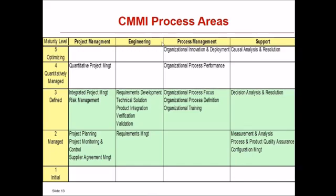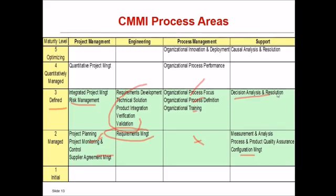The CMMI process areas by level: At level one (Initial), there are no defined process areas. At level two (Managed), project management includes project planning, project monitoring and control, and supplier agreement management. Engineering covers requirements management. Support includes measurement and analysis, process and product quality assurance, and configuration management. At level three (Defined), project management adds integrated project management and risk management. Engineering spans from requirements through verification and validation. Process management adds organizational process focus, process definition, training, and decision analysis and resolution. At level four (Quantitatively Managed), quantitative project management and organizational process performance are added. At level five (Optimizing), organizational innovation and deployment, and causal analysis and resolution are included.